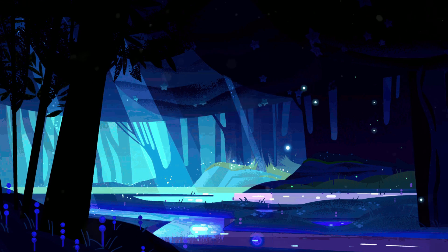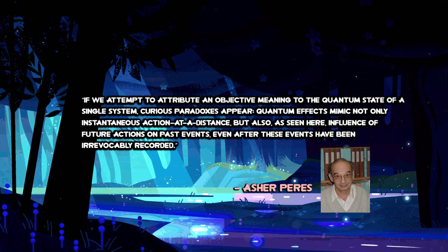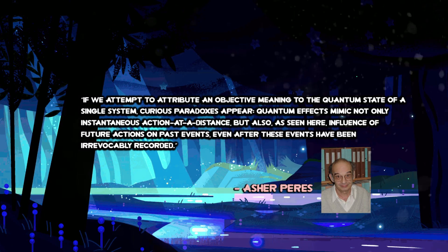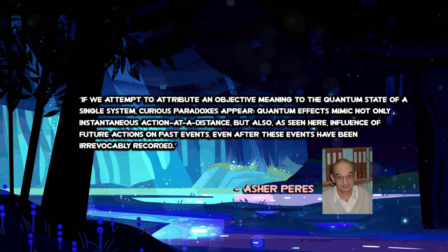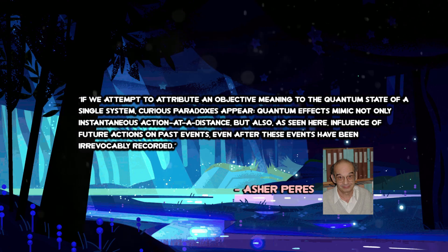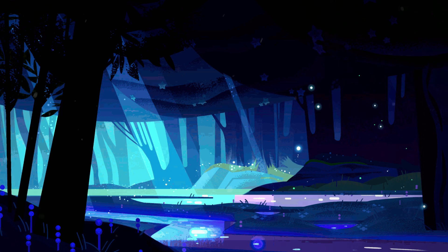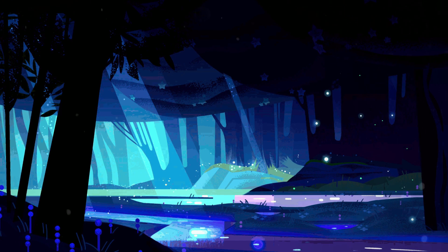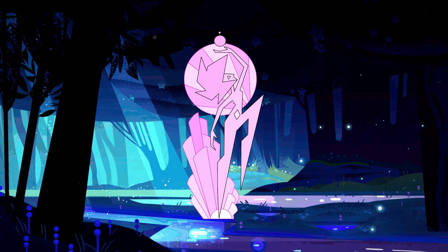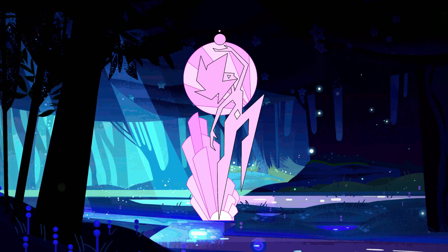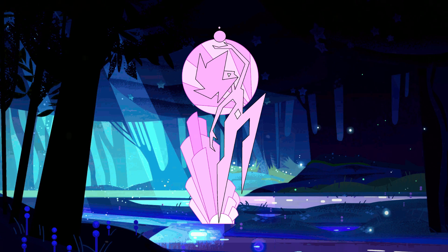Asher Perez, a pioneer in quantum information theory, once said: "If we attempt to attribute an objective meaning to the quantum state of a single system, curious paradoxes appear. Quantum effects mimic not only instantaneous action at a distance, but also influence of future actions on past events, even after these events have been irrevocably recorded." This means that it would be possible for the actions of Rose Quartz during the rebellion — while the fact that it happened would remain recorded in history — to be changed, causing whatever led to Pink Diamond shattering to be altered so that it never occurs, thus changing the future of the present-day Crystal Gems and allowing Pink Diamond's existence to live on.